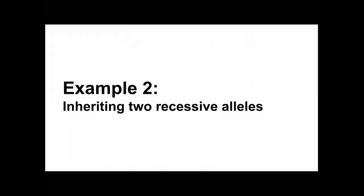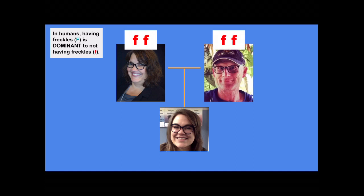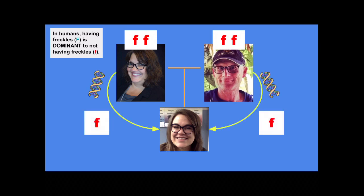Example two: inheriting two recessive alleles. In humans, having freckles is dominant to not having freckles. My mom's genotype is ff because she doesn't have freckles. My dad's genotype is also ff because he doesn't have freckles. My mom passes me that recessive allele, my dad passes me another recessive allele. So I end up with ff as my genotype — and sadly, no freckles.